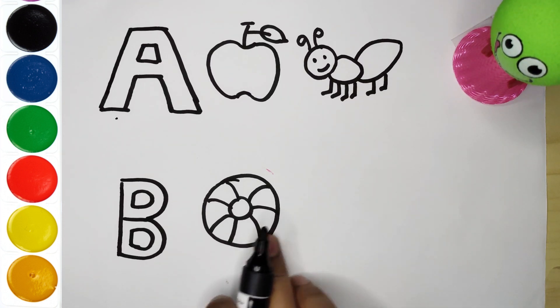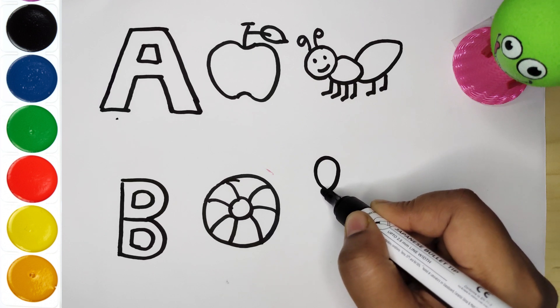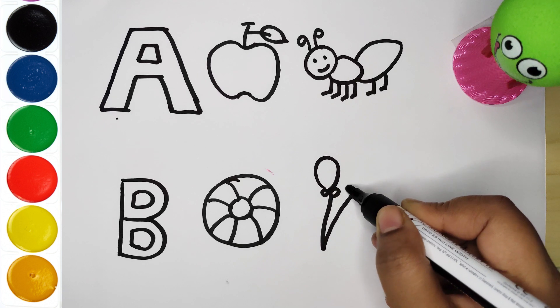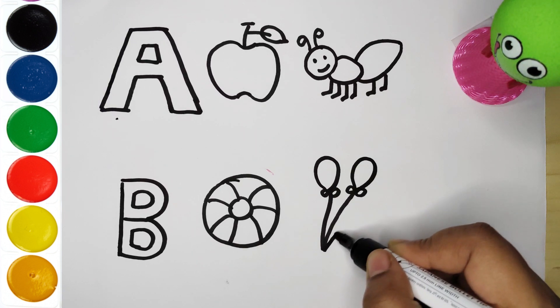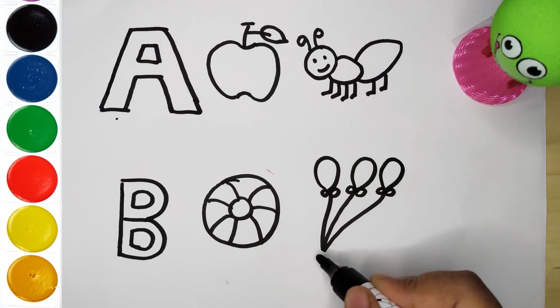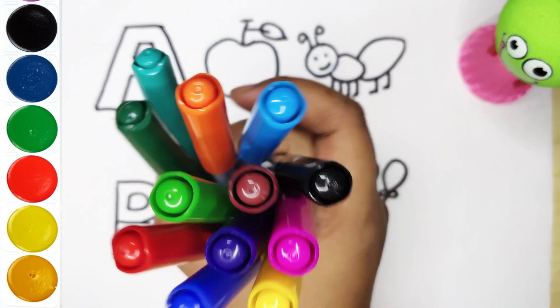B is for ball. A B C D E F G H I J K L M N O P Q R S T U V W X Y and Z. Now I know my ABCs. Green balloon, B is for ball. Now let's learn colors.